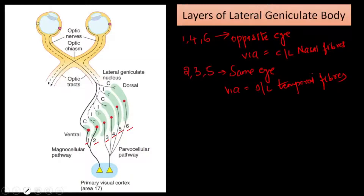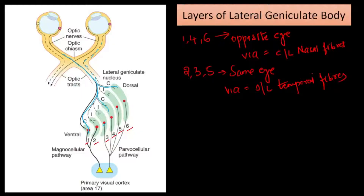Looking at the diagram, we can trace these pathways. The fibers coming from the opposite side are relaying in layers 1, 4, and 6. The dotted line represents the ipsilateral temporal fibers, which are relaying in layers 2, 3, and 5.